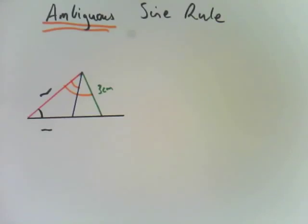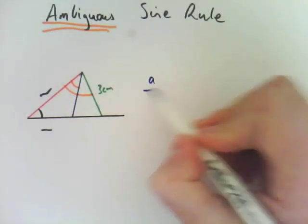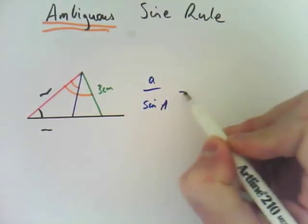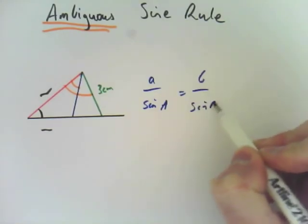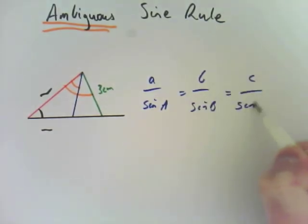So you use the sine rule the way you normally would. That doesn't change. The difference comes when you work it out and you need to be aware of what you're looking at.